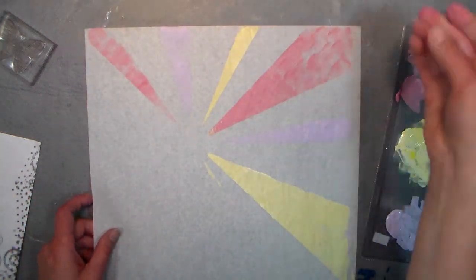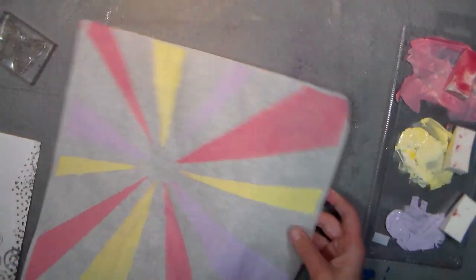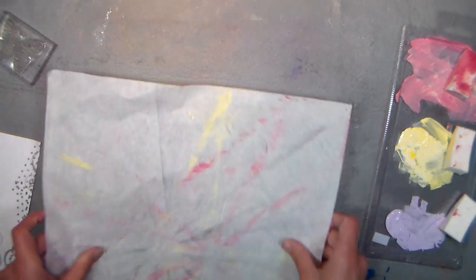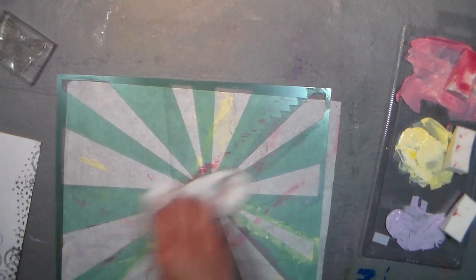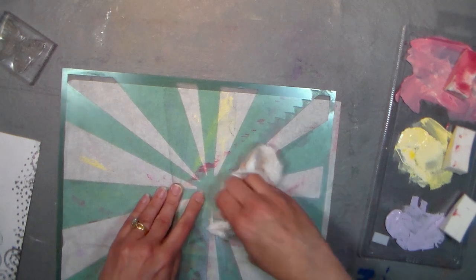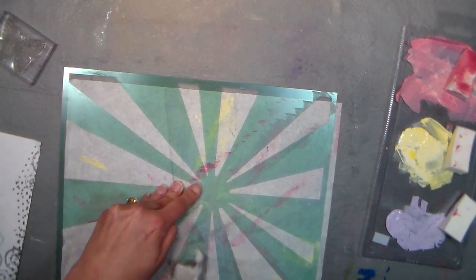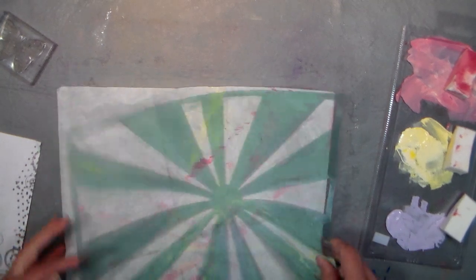All right, I'm just gonna quickly wipe off my stencil. I got a scrap of deli paper that I've been using for all my cleaning, and I think that when I'm all done I'll have a kind of an interesting background there. Just wipe that off, just so I don't get any of this acrylic paint on my stamps. You don't have to be perfect, just clean it off a little bit there.